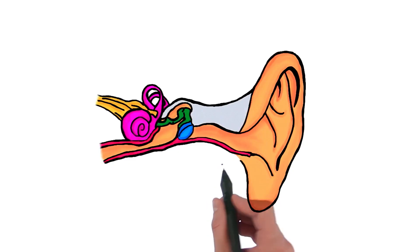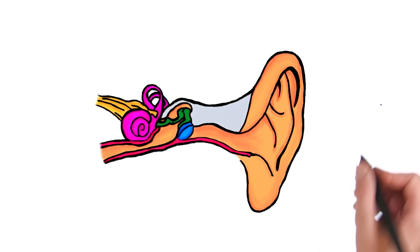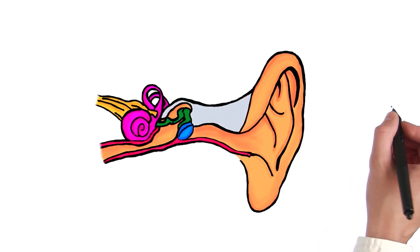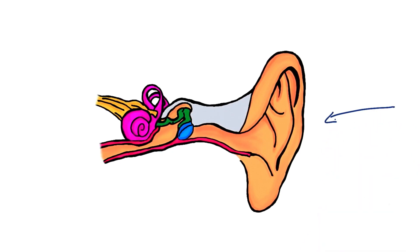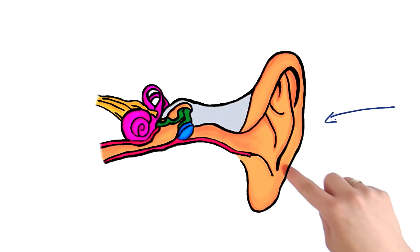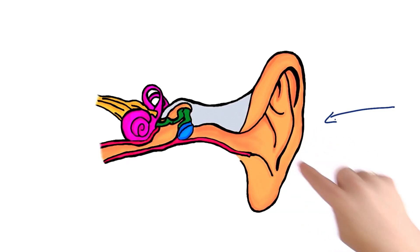Take a look at this diagram. Can you tell me what this is? It's an ear. Exactly, and the sound wave is collected by this tube thing here, right? Exactly, and that tube thing is called the ear canal.